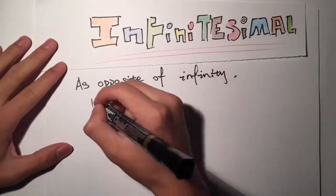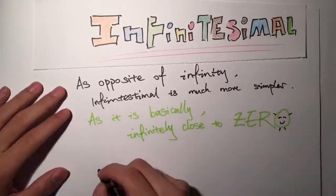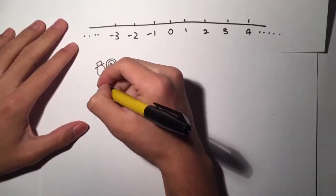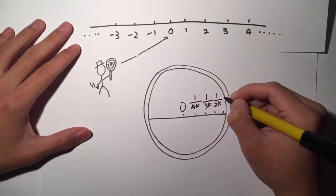It's called infinitesimal. As the opposite of infinity, infinitesimal is much simpler as it's basically infinitely close to zero.